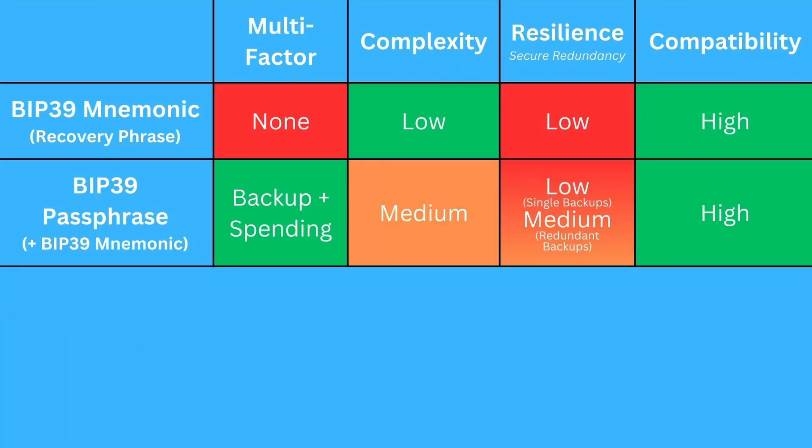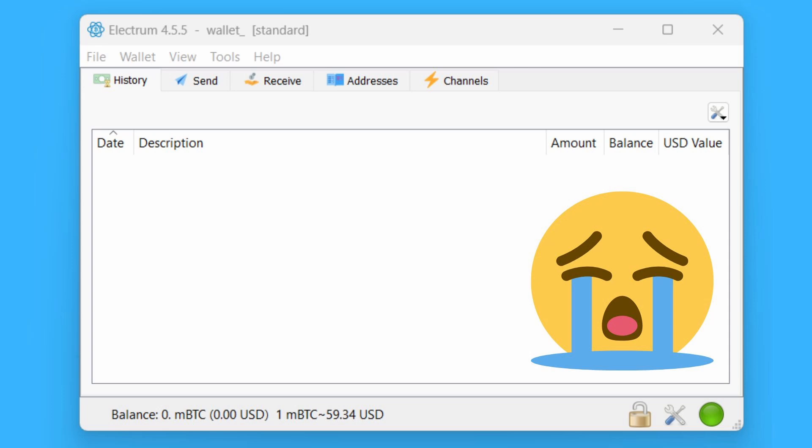Just like with BIP39 mnemonics, if you have a multi-currency wallet, your BIP39 seed phrase plus your passphrase together will be the single backup used to regain access to all of the different coins and chains you are using. One of the biggest challenges with a BIP39 passphrase is it certainly introduces a lot more complexity. If you have a typo in entering your BIP39 passphrase, you will see a bunch of empty wallets and no transactions — you won't get an error message or any confirmation prompt; your wallet will just accept it and show you empty wallets.